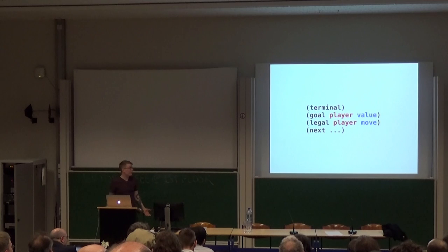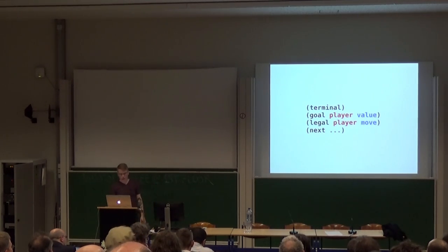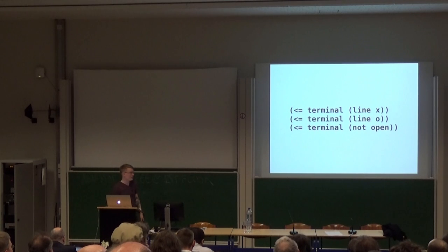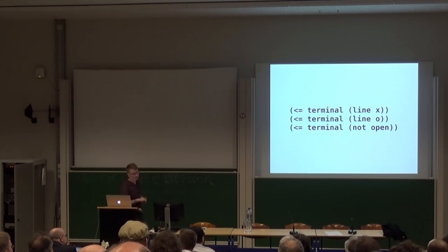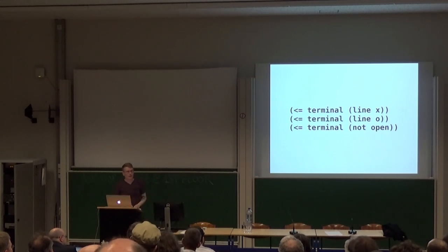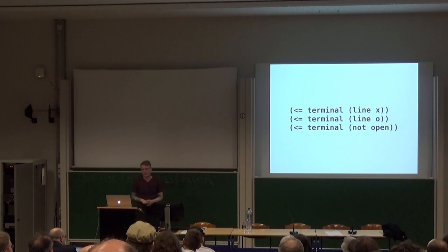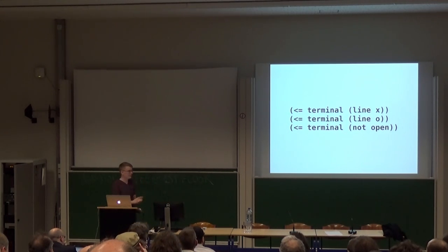To actually define the flow of the game, we define four predicates. The first is terminal, which says whether the game is over given the current state. So if X has a line in our current state, or O has a line, or if we're not open, then the game is over. This is the first time we see negation — GDL does have negation. There are a few restrictions on negation and recursion in GDL that I'm not going to talk about here; you can look at the spec if you're interested.